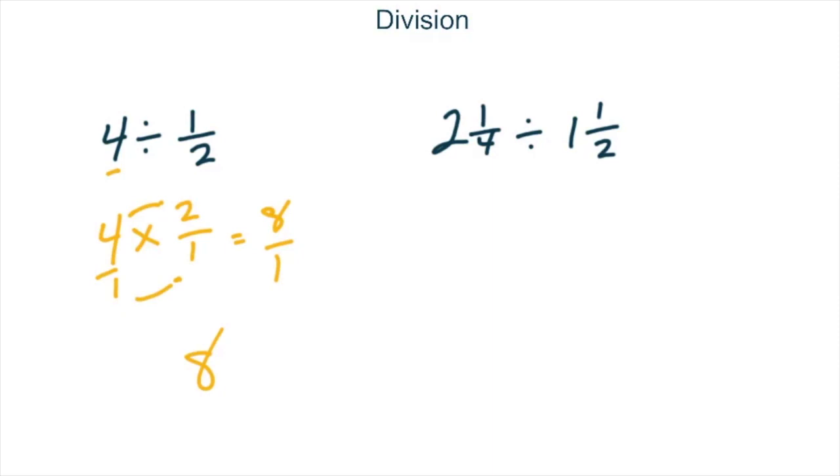With our mixed numbers on the right-hand side, again, keep change flip, but first let's convert to improper fractions. 4 times 2, that's 8, plus 1 more. This tells us how many groups on the bottom. The top tells us how many extras we have. So 4 times 2 is 8, plus 1 more makes 9. So we have 9 fourths. On the right-hand side, 2 times 1 is 2, plus 1 more is 3. So we have 3 halves.